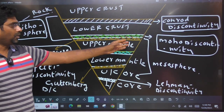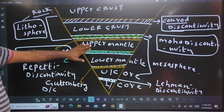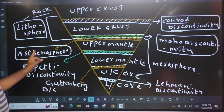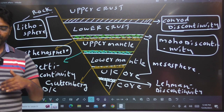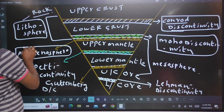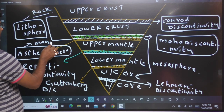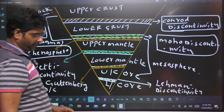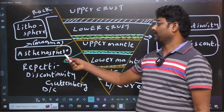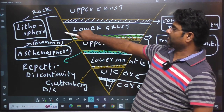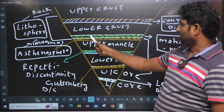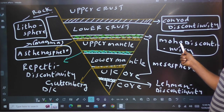Where is the asthenosphere? This is the Moho discontinuity, upper mantle — this is the asthenosphere. This is very important. This is the weak area. This is the magma state. We can say that earthquakes are originated at the asthenosphere. This is the asthenosphere zone. This is the Moho discontinuity.